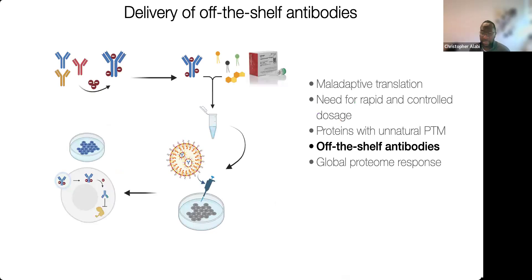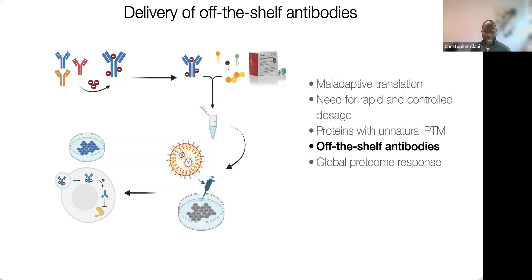Finally, some data on off-the-shelf antibodies — one of the most exciting parts. Can you simply grab a commercially available antibody off the shelf and just deliver it into cells? These are 150 kilodalton antibodies. There are tons of antibodies used in Western blots that are highly validated against their targets. In our minds, we're thinking: can we do what we do with small molecules to inhibit certain pathways — and can we do exactly the same thing with antibodies, delivering them right into cells? Can we take an off-the-shelf antibody, cloak it, add it to lipid nanoparticles, deliver it into a cell, and see some sort of functional output?